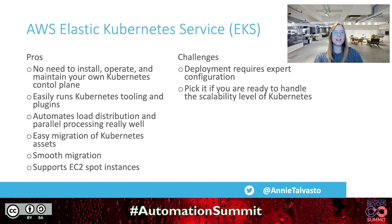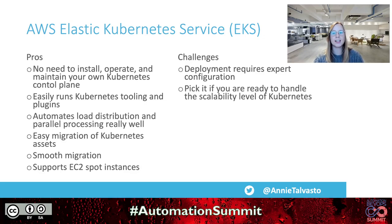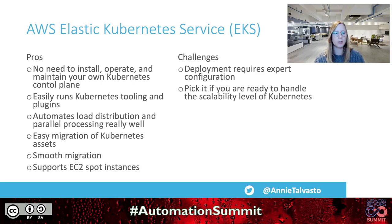EKS is a service that provides and manages the Kubernetes control plane on its own. You have no access to the master nodes on EKS since they're under a special AWS account. EKS establishes the control plane and Kubernetes API on your managed AWS infrastructure. You can deploy workloads using native Kubernetes tools like kubectl, Kubernetes dashboard, Helm, and Terraform.